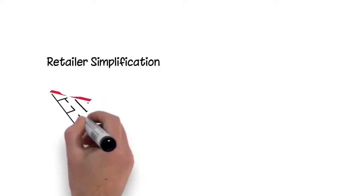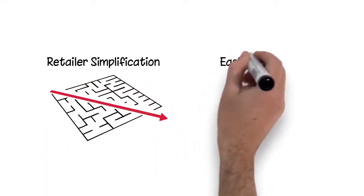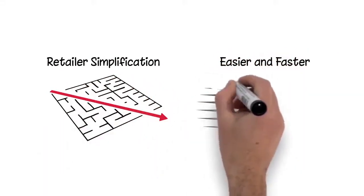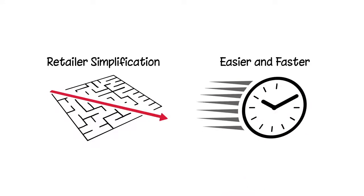The concept of retailer simplification will be the backbone of everything that we do in 2016. We want to make things easier and faster for our retailers so they can spend more time on the sales floor serving customers and less time in the back office fighting bureaucracy.